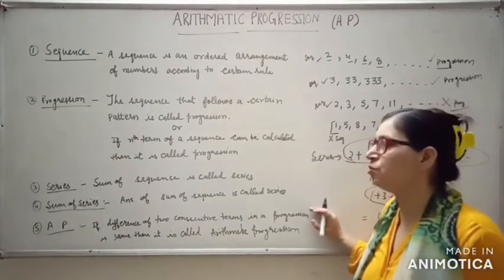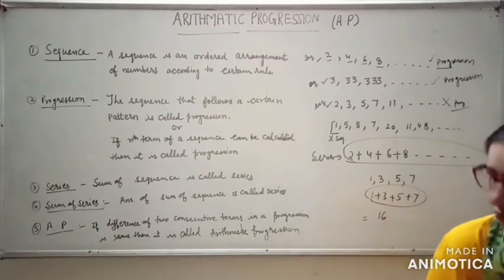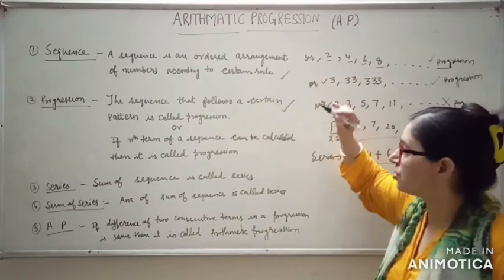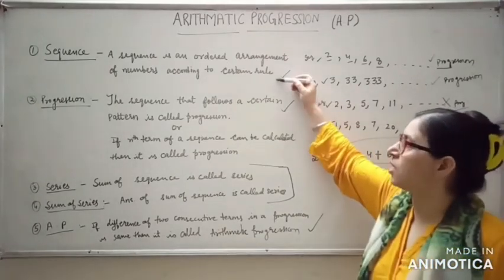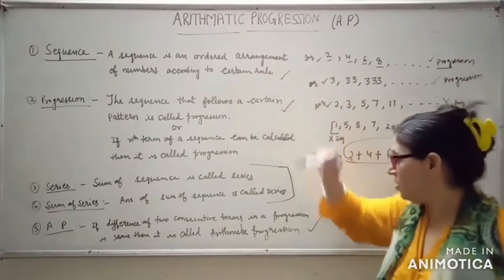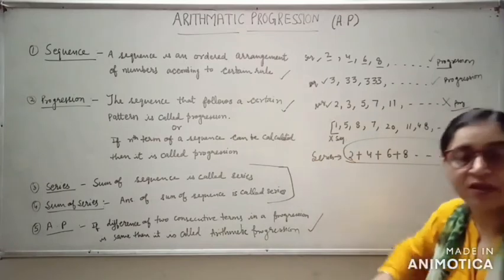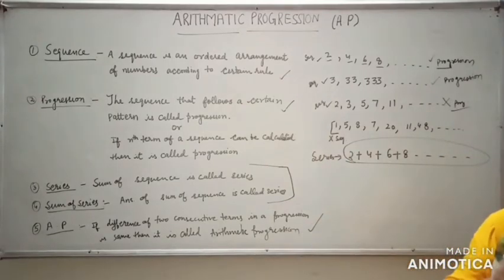Now come to Arithmetic Progression. If the difference of two consecutive terms in a progression is the same, then it is called an Arithmetic Progression. AP is those progressions in which the difference of consecutive terms remains the same.